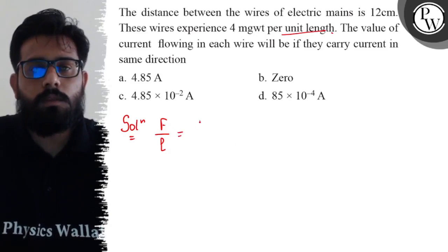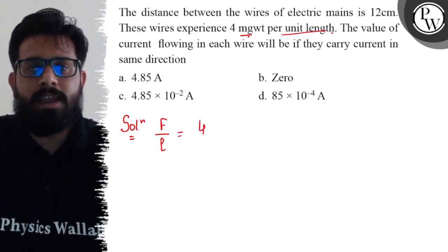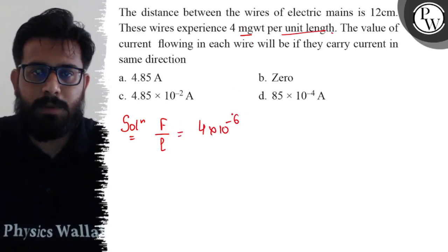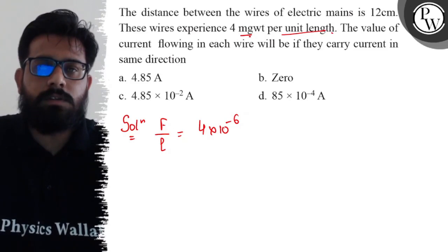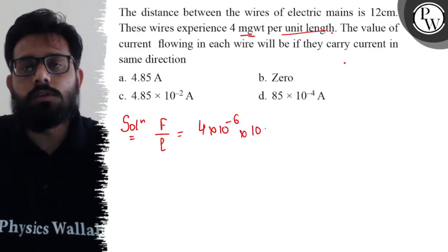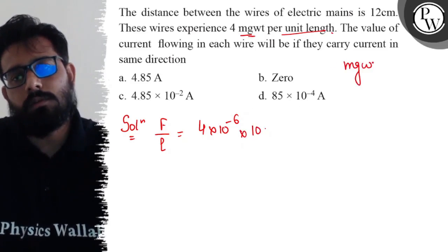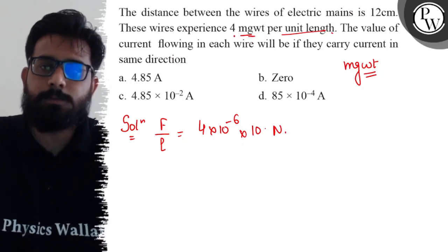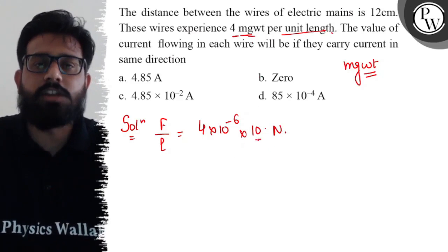Converting this milligram, we get 4 × 10^-6. Then we have this value of g, which is approximately 10. Since it's mg weight, this can be converted to newtons by multiplying with the acceleration due to gravity.